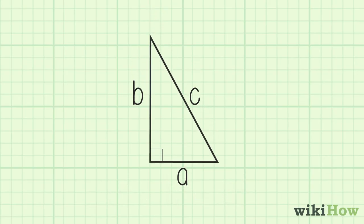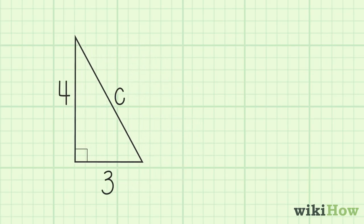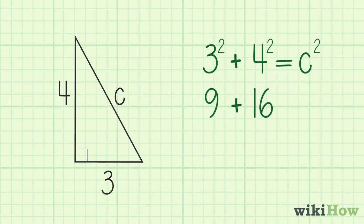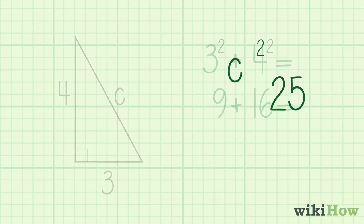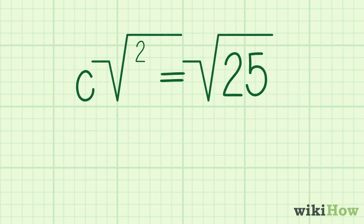For example, if the length of the known sides are 3 and 4, you would just add 3 squared plus 4 squared, or 9 plus 16, and get 25. Then, you would take the square root of 25 to find C, which is 5.